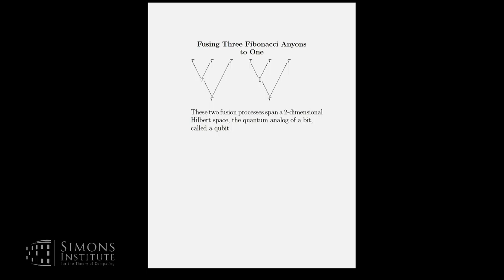These two fusion processes, as I mentioned in answer to the question, the fusion processes are for some reason actually considered to be the vectors in the Hilbert space. And these two fusion processes span, well since there's two of them, they span a two-dimensional Hilbert space. And this is a qubit, the quantum analog of a bit. So a bit is one of two elements of a two-element set. A qubit is a state in a two-dimensional Hilbert space. And they are analogous from classical to quantum computation.